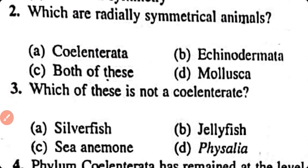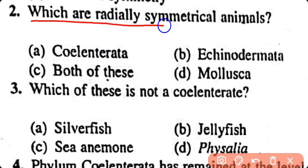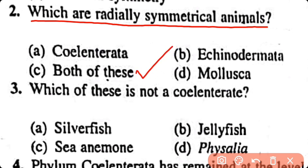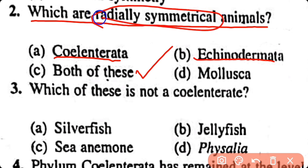Question number 2. Which are radially symmetrical animals? Cnidaria, Echinodermata, both of these, Mollusca. Option 3. The members of phylum Cnidaria and Echinodermata are radially symmetrical.